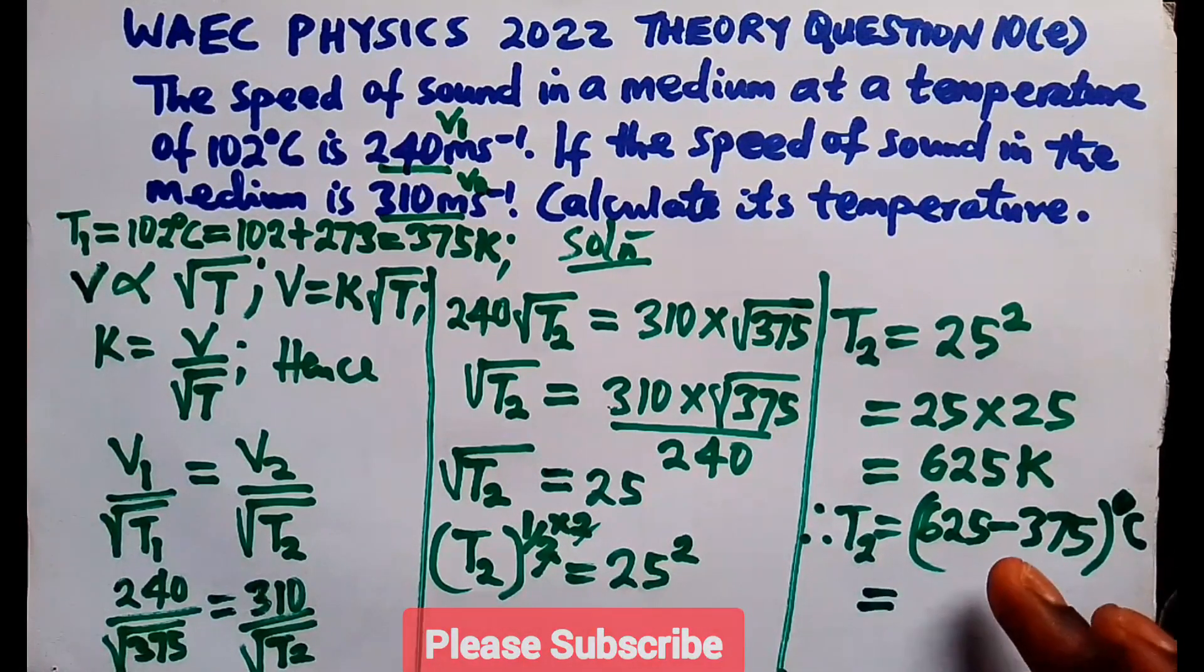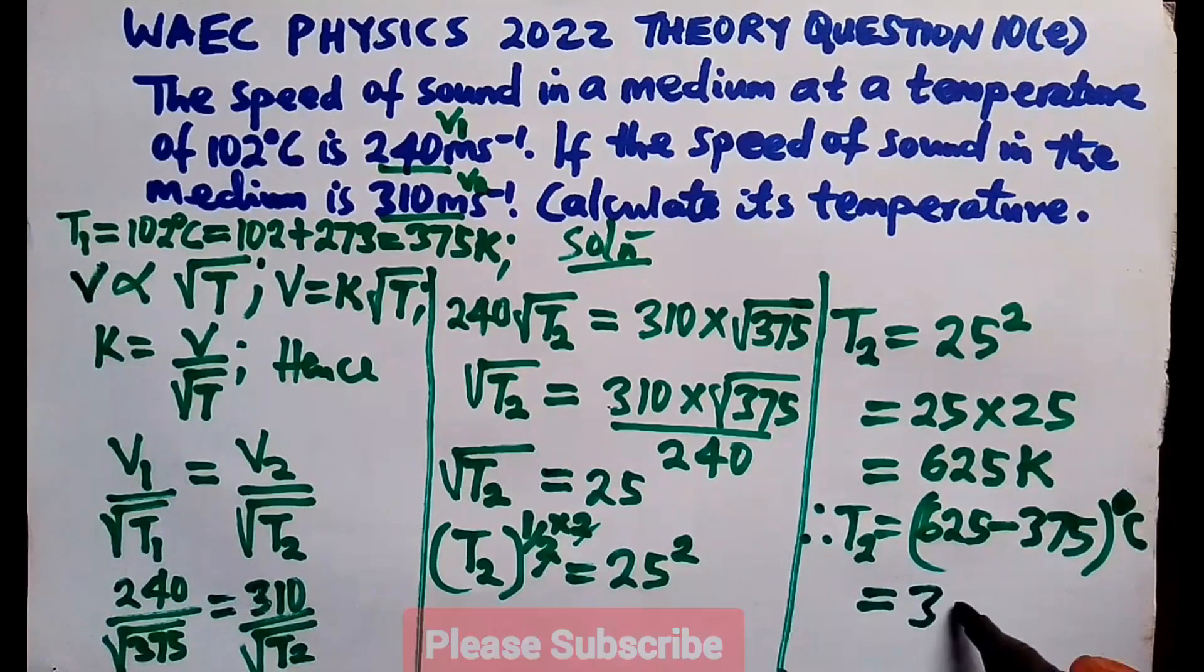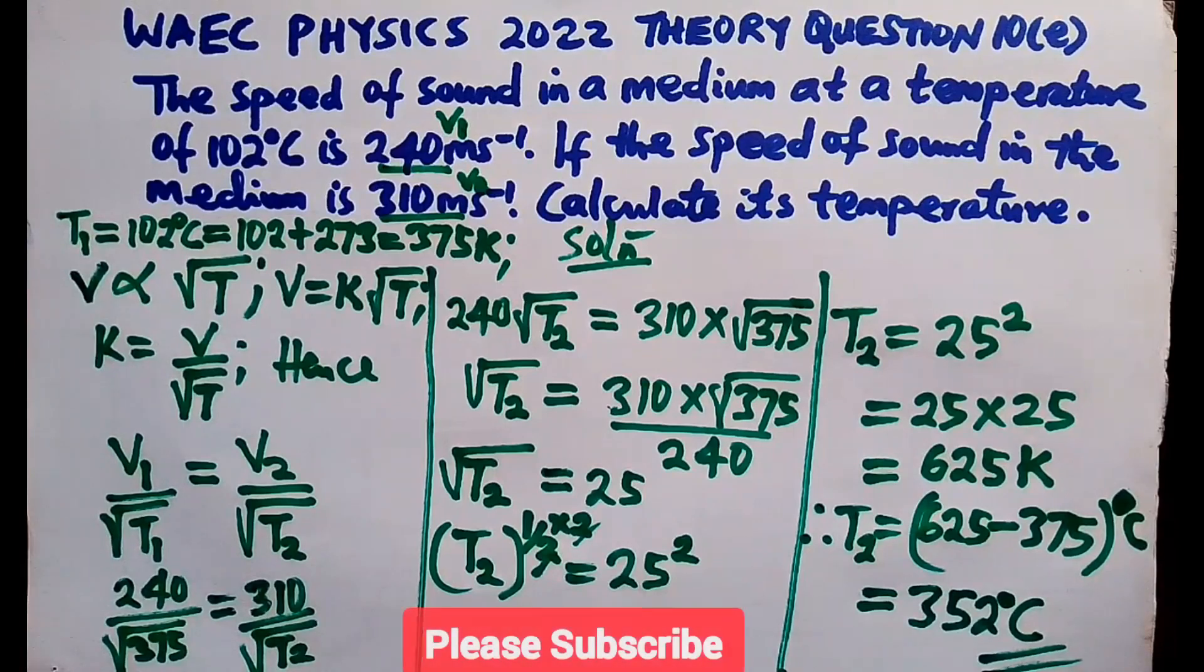So, when we do that, 625 minus 375. Subtract that, you have 352 degrees Celsius. So, this is the answer to that equation.